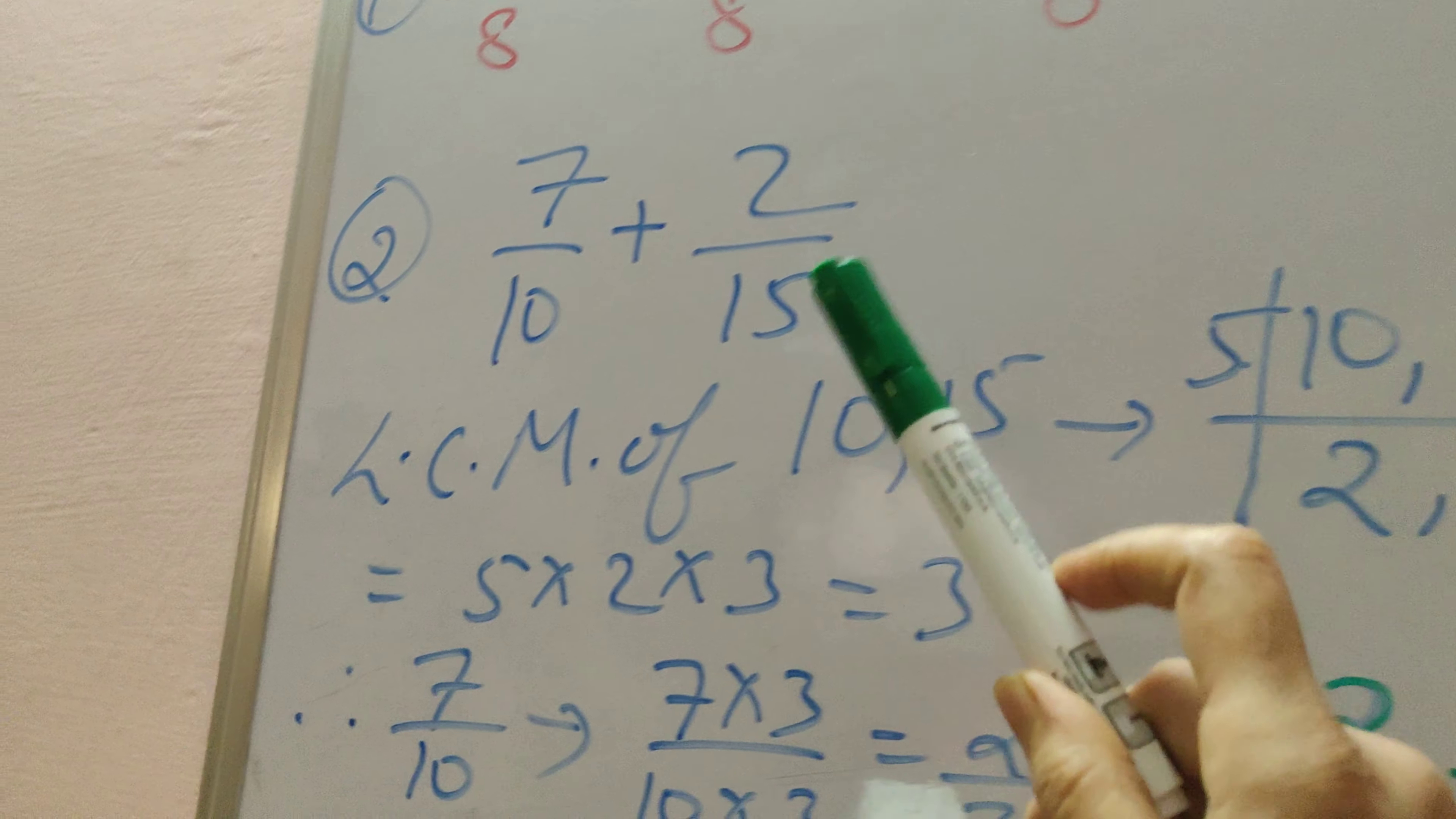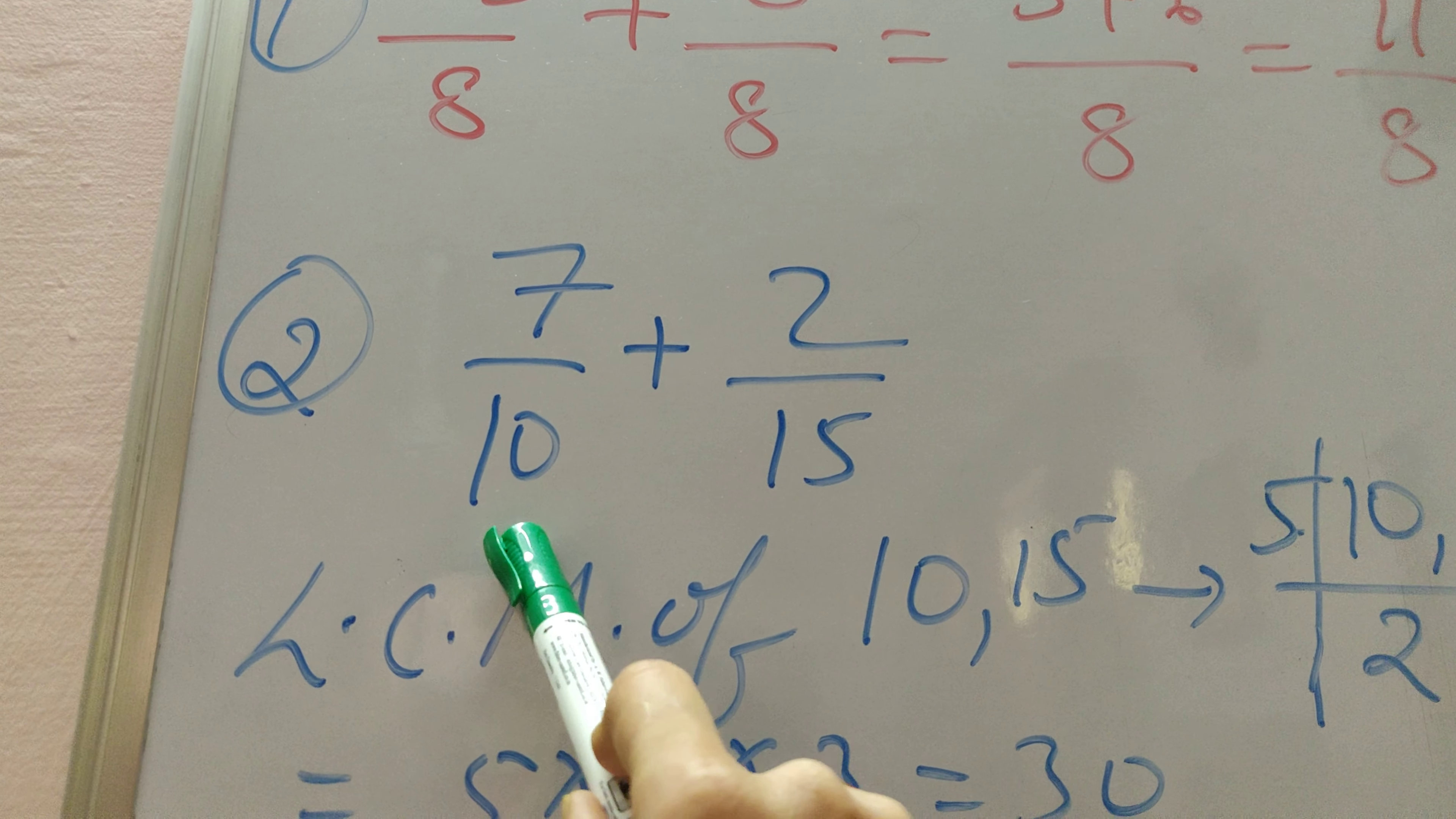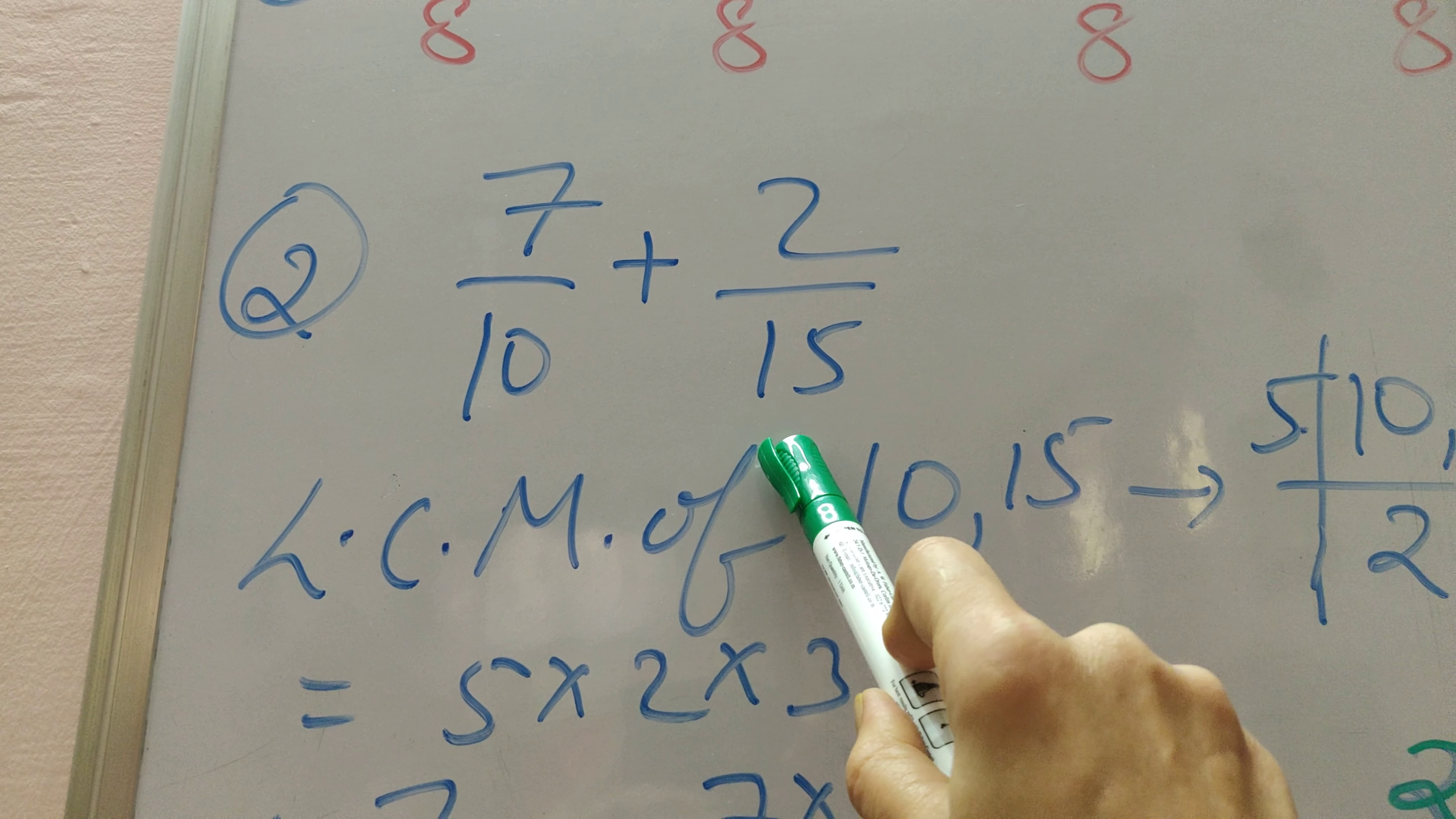Now, let's come to fractions in which the denominators are different. You see I am showing you here addition of two fractions with different denominators and different numerators. We have 7 by 10 plus 2 by 15. You can see the denominators are different. So in this case, what will we do?